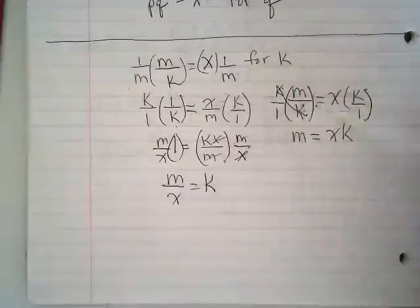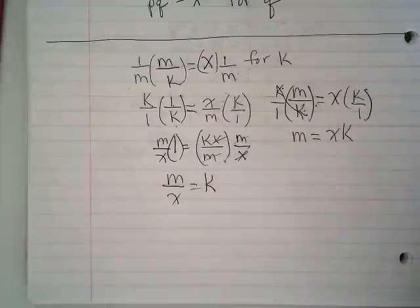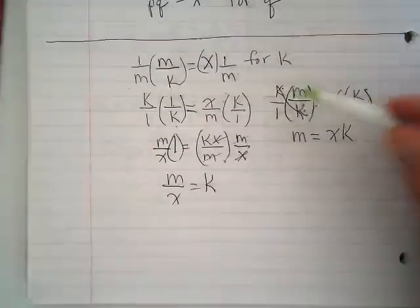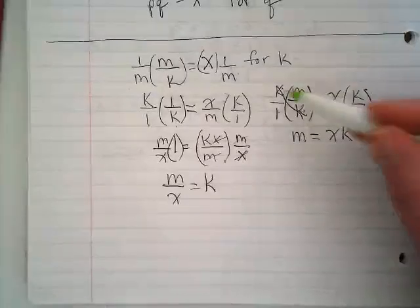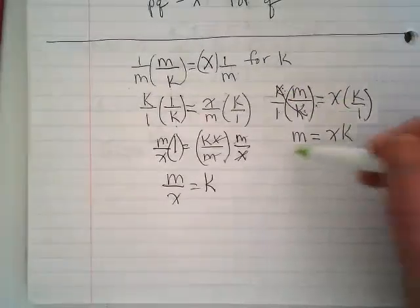Because k over k would be 1. k times m over 1 times k. k over k is 1 leaving us with just the m.